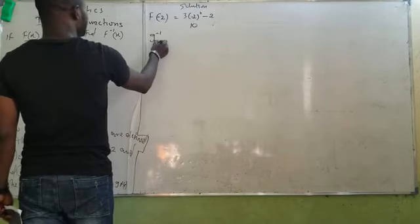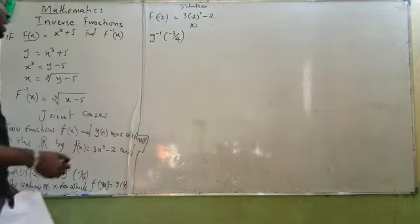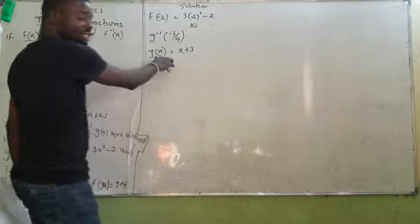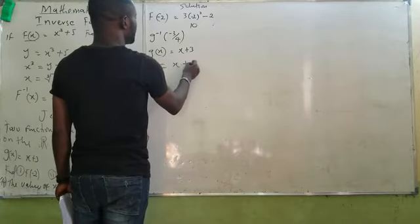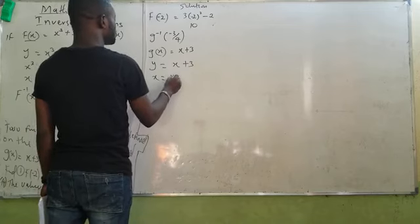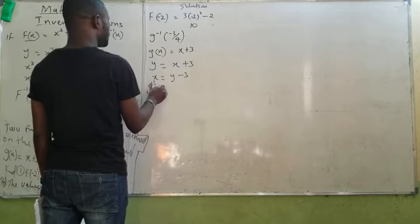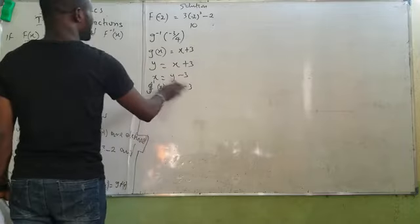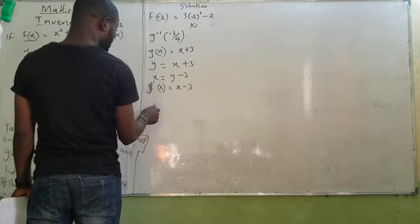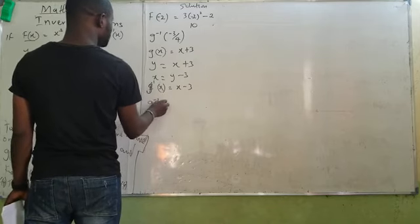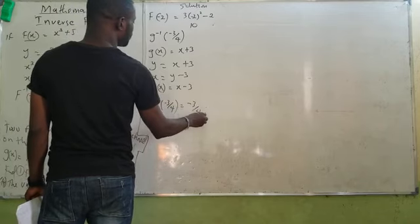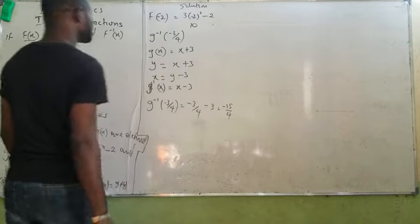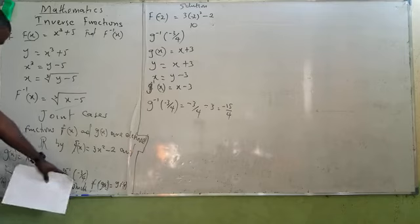The next one says find g inverse of minus 1 over 4. We can't just put g inverse like that — we need to find the inverse. My g of x equals x plus 3, so y equals x plus 3, and x equals y minus 3. It means my g inverse of x equals x minus 3. Since that is the inverse, g inverse of minus 1 over 4 equals minus 1 over 4 minus 3, which gives minus 13 over 4. That is all about that.